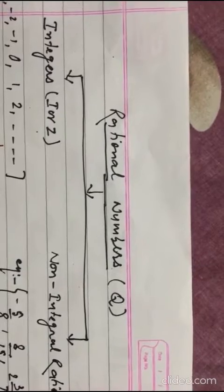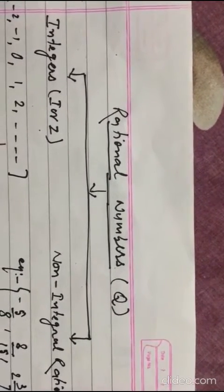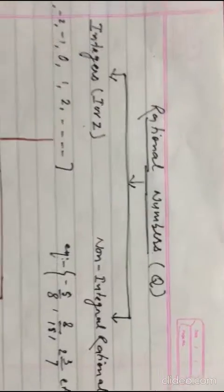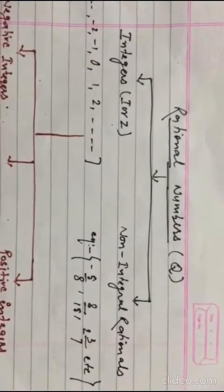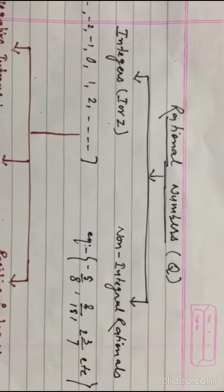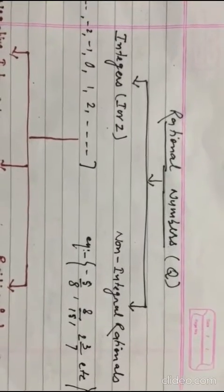Rational number is denoted by capital Q. The rational number is further classified into two groups: integers and non-integral rationals.